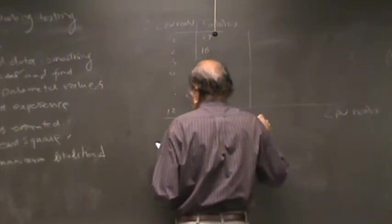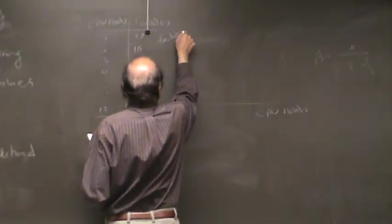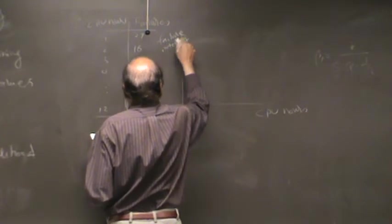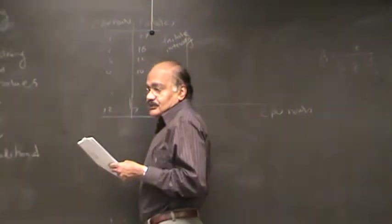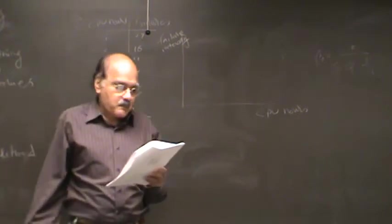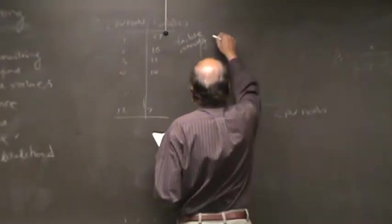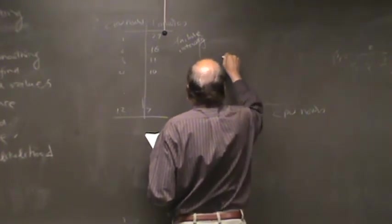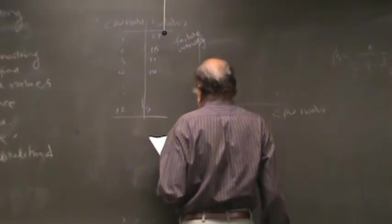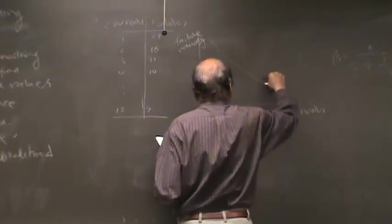And this is your failure intensity — the failure intensity is the number of defects found per unit time. And you will make a plot of CPU time versus failure intensity, and your actual data points would be sort of like this, and you will fit a curve like this.